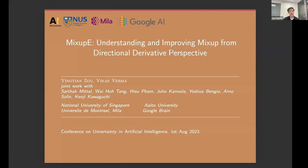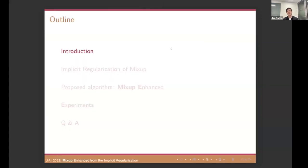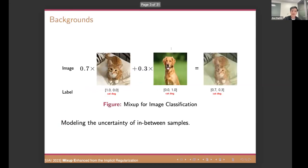So our research focuses on the powerful data augmentation technology called Mixup. As many of you may know, Mixup has proven to be a valuable tool in improving the generalization of deep neural networks. But the underlying mechanics still remains unclear yet. So here is the content of today's talk. We will kick things off with exploring the implicit regularization of Mixup and then introduce our proposed algorithm that makes up enhanced MixupE.